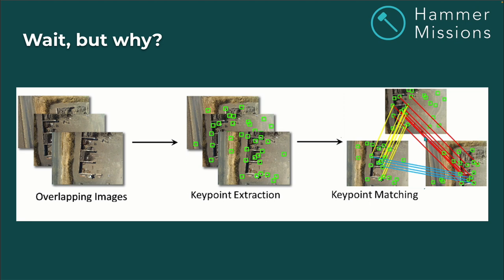In this diagram you can see overlapping images. Those overlapping images will have key points that tie into the overlap, and the software will be able to match those key points for your final render.